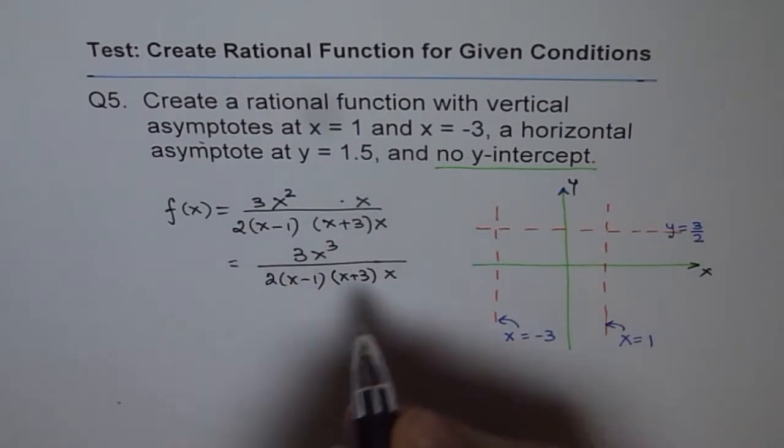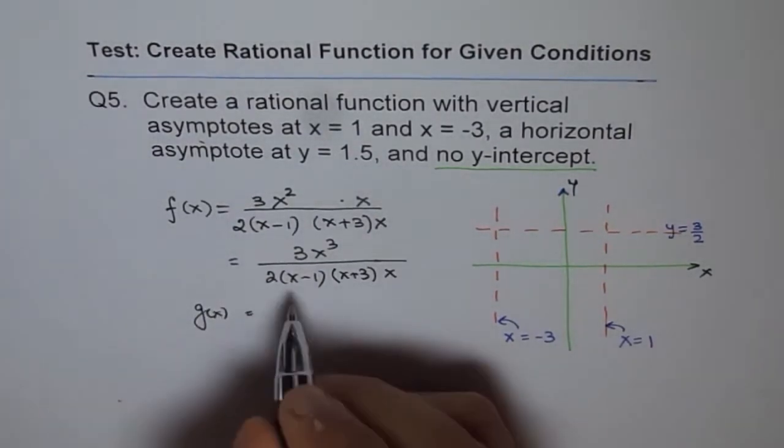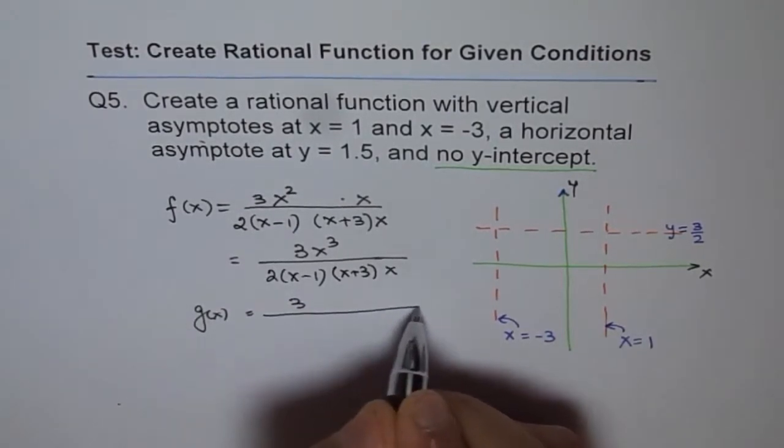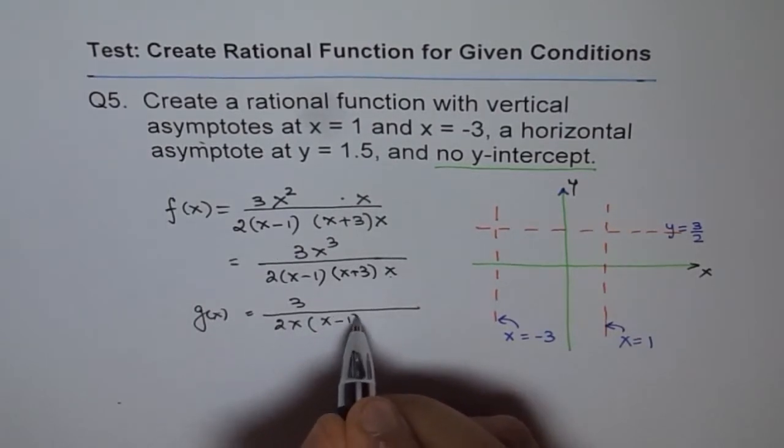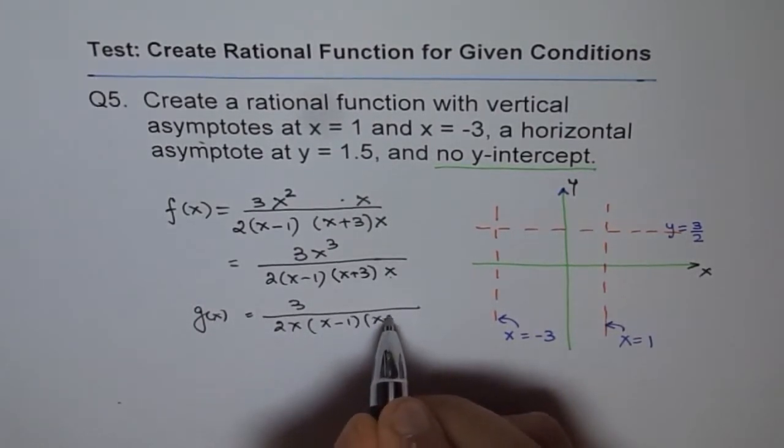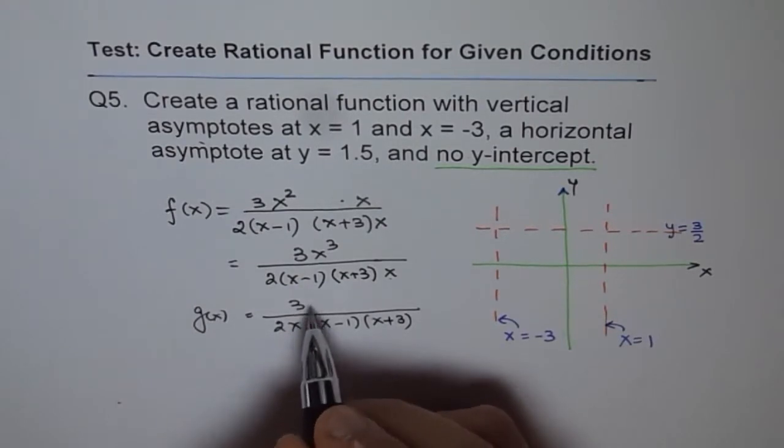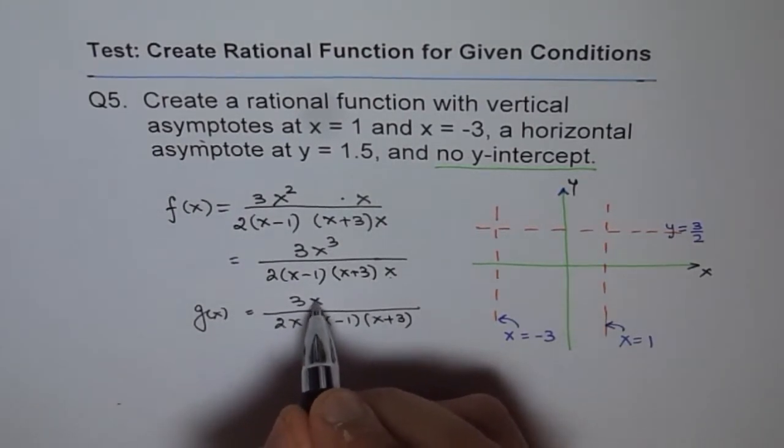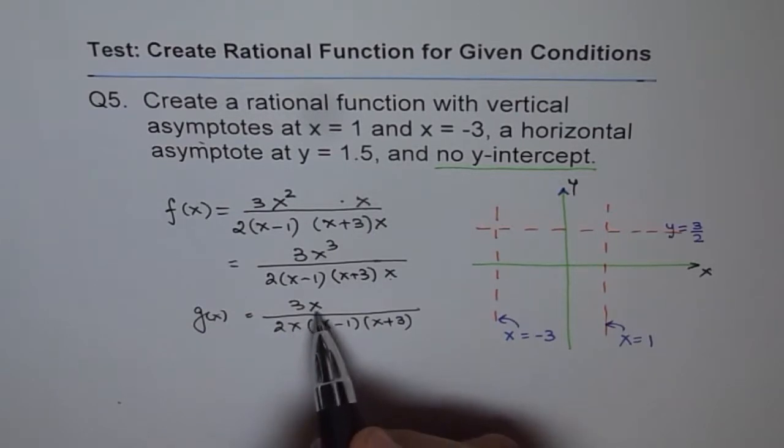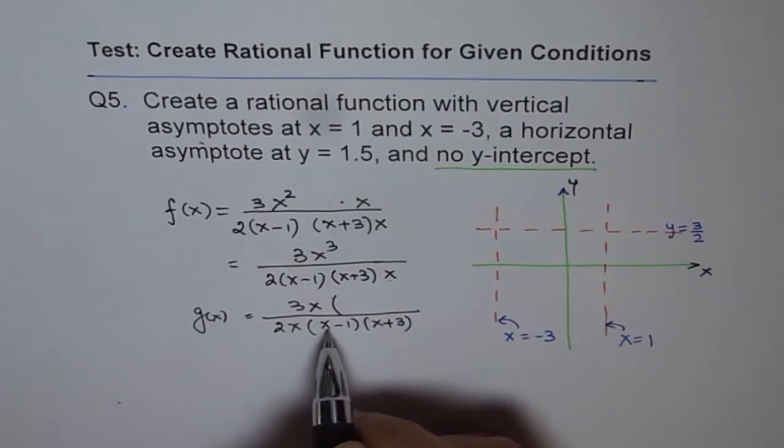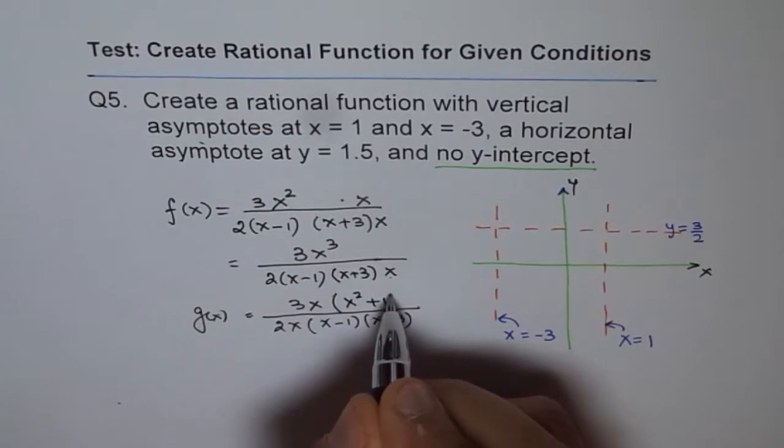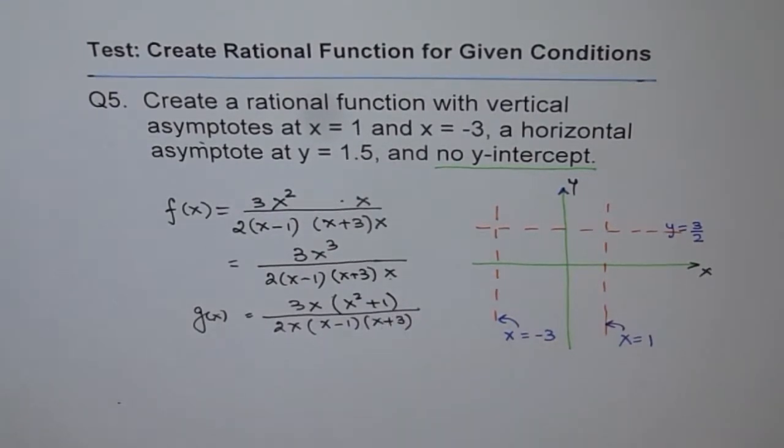There could be other answers. Like you could have a function g of x, which could be, let me write 3, these two are must, x minus 1 times x plus 3. And with that x, we do have x here also, because this needs to cancel out to give you a hole. And then we need something which will give me x squared, because degree should be the same. So I could write x squared plus 1, for example. Do you see that? So that will also work for us.